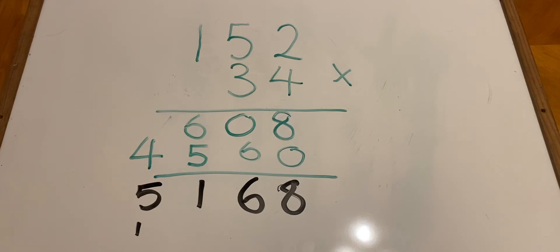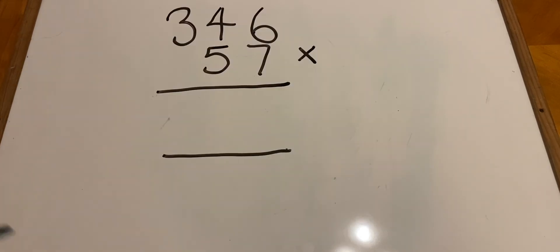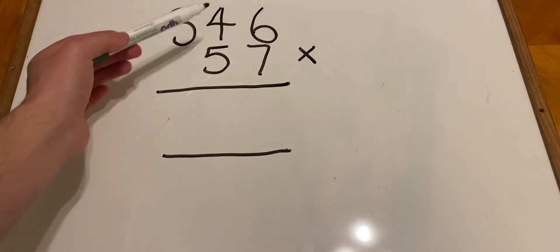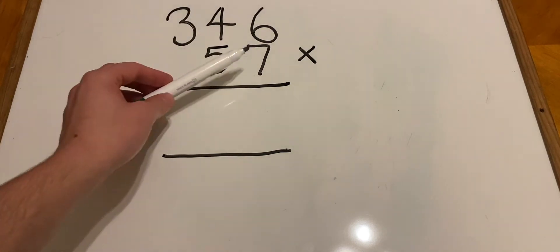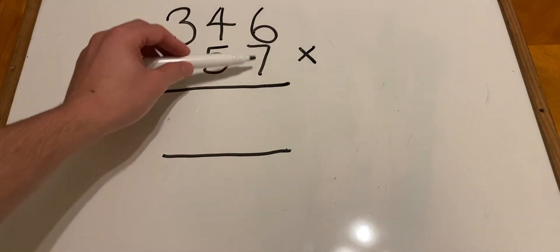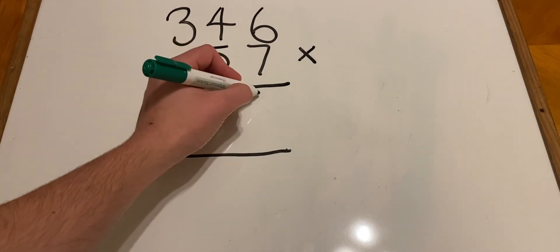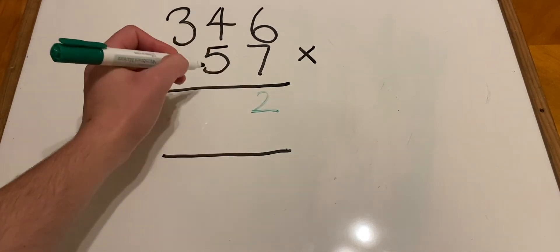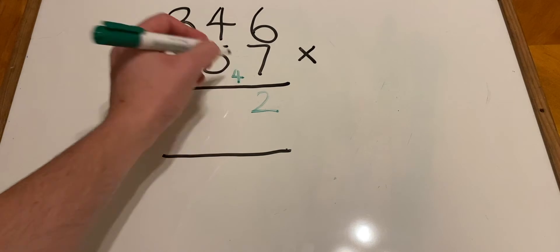Let's take a look at another example. Remember, we start with the ones. We're going to multiply 346 by 7 first. 7 times 6 is 42, so 2 ones. We're going to place the 4 here and not forget about that.